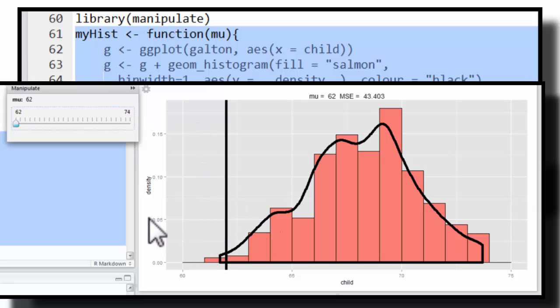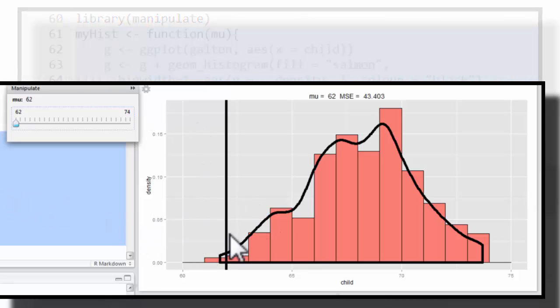Okay, so here is the plot of the child's heights. It's the histogram, and I've overlaid a continuous histogram on top of it. Here, this vertical black line is our current estimate of the mean.